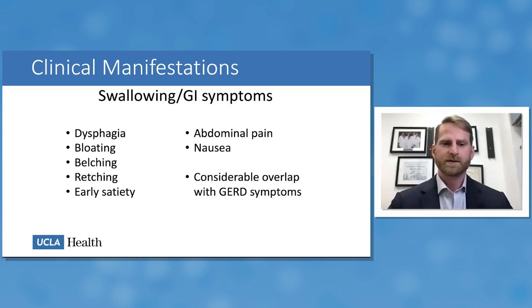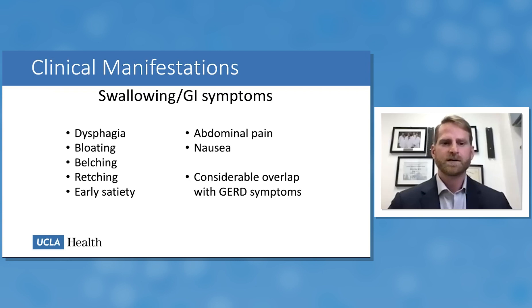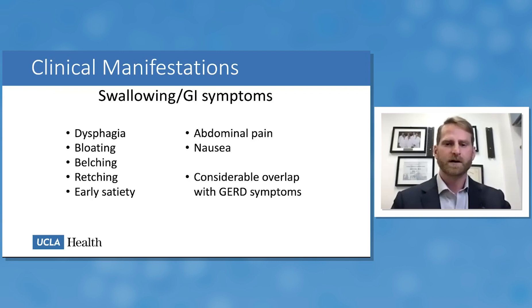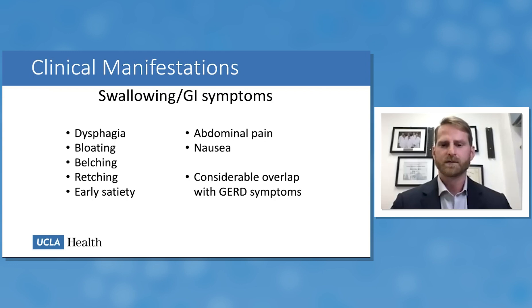Non-specific GI and swallowing symptoms are common with hiatal hernias. These include dysphagia — commonly the result of angulation of the GEJ in a paraesophageal hernia due to large contents adjacent to the esophagus in the chest — as well as bloating, belching, retching, and early satiety. These symptoms are often difficult to attribute but in the setting of a paraesophageal hernia are typically caused by it, with considerable overlap with GERD symptoms.